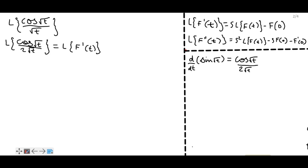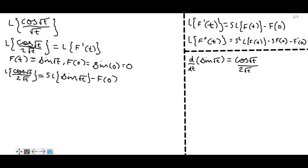So we can write the Laplace transform of cos(√t) / (2√t) as the Laplace transform of f'(t), where f(t) = sin(√t) and f(0) = 0, because sin(0) = 0. Using the Laplace transform of derivatives, we can write the Laplace transform of cos(√t) / (2√t) as s times the Laplace transform of sin(√t) minus f(0).